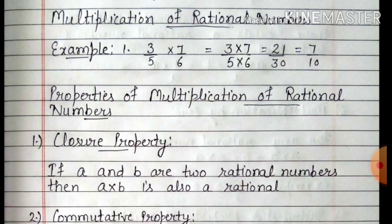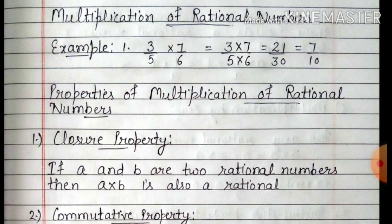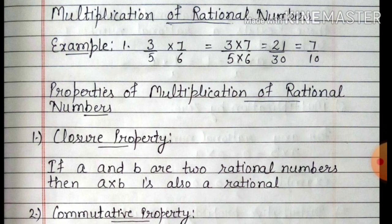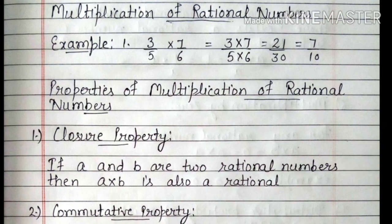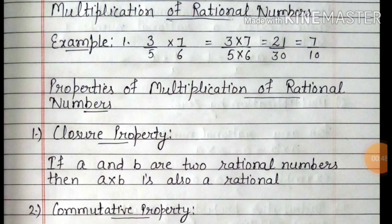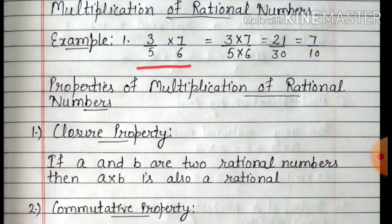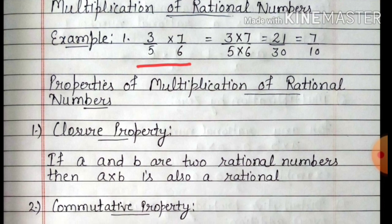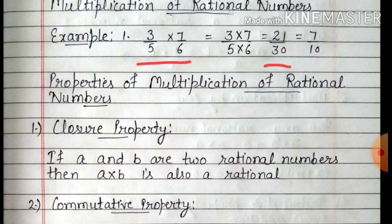First is multiplication of rational numbers. अगर हम two rational numbers को multiply करने हैं तो किस तरह से करेंगे? तो यहाँ हम एक example ले रहे हैं — 3 by 5 multiply 7 upon 6. तो 3 by 5 को हम multiply कर रहे हैं 7 upon 6 से. जो numerator है उसे numerator से ही multiply करेंगे, denominator 5 को denominator 6 से multiply करोगे. तो 3 को 7 से multiply करेंगे — 21, और 5 को 6 से multiply करेंगे — तो 30 आएगा.